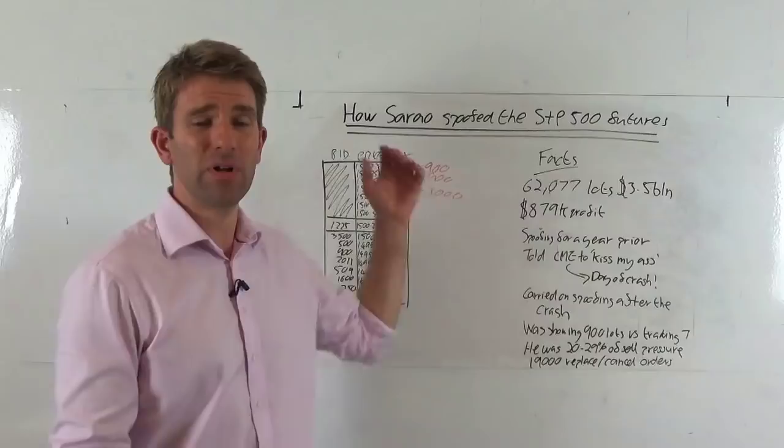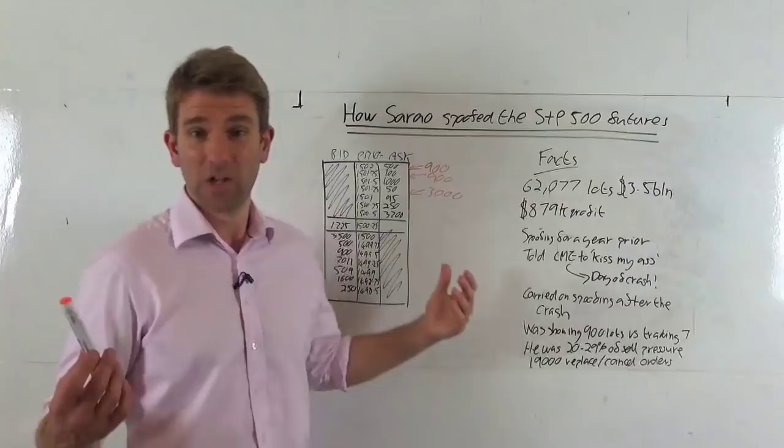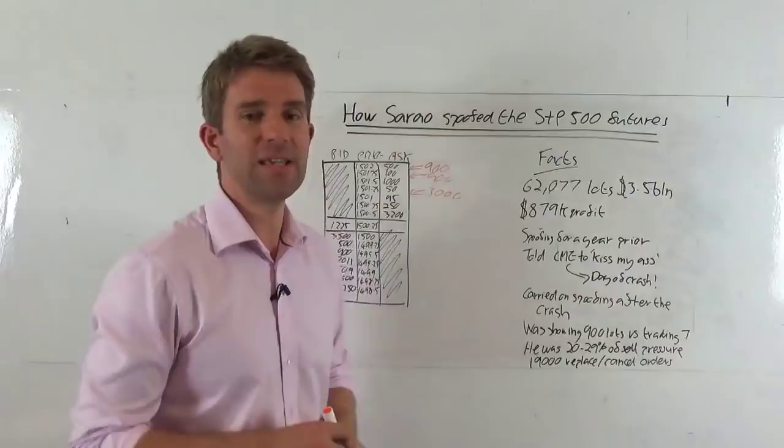He did 19,000 replace or cancel orders. In other words, he put 19,000 orders in that he didn't fill, or he moved, or he did something with them, which is quite a significant number. And you can see why he used an algo for that.